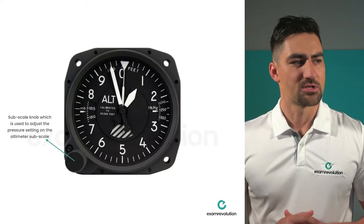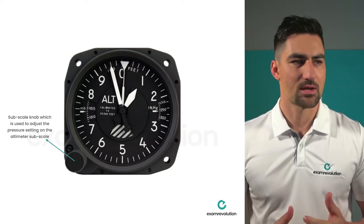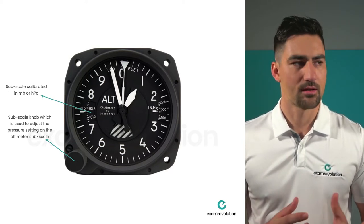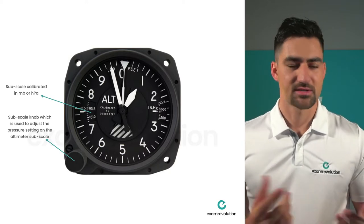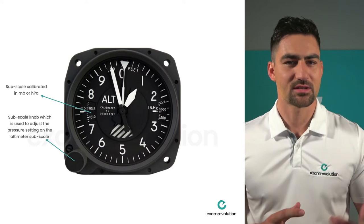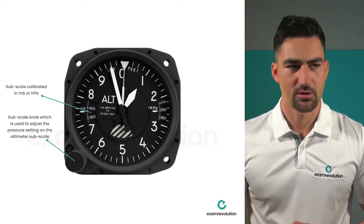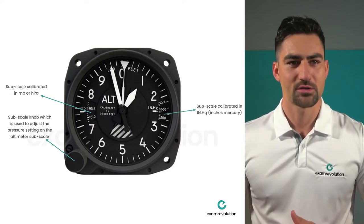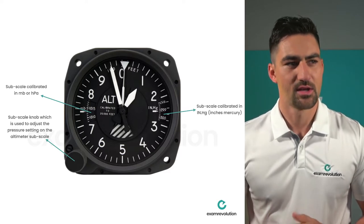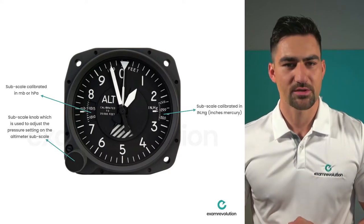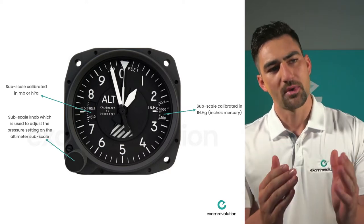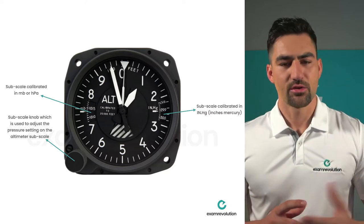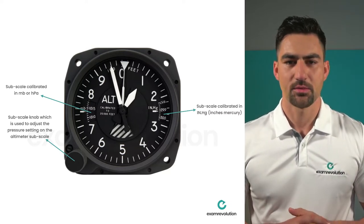On the altimeter, the subscale knob is used to adjust the pressure setting. The subscale on the left-hand side is calibrated in hectopascals or millibars — the same thing, just different terminology. That's typically what we use in South Africa and Europe. You also get the inches of mercury subscale, typically used in the US, and these two are interlinked: as you change hectopascals, the inches of mercury subscale also changes automatically.